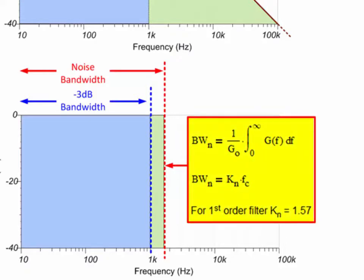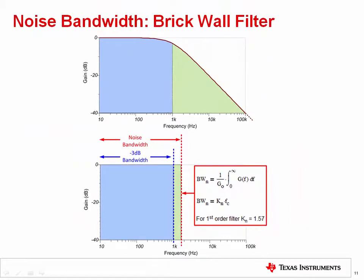Notice that the formula used to calculate the noise bandwidth involves calculus. In general, this formula is only needed once and allows us to determine easy to use correction factors for different order of filters. In this example, the formula was used to compute the correction factor of 1.57 for a first order filter. On the following slide, we'll see correction factors for other order filters.